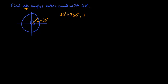If we add another revolution, we get 20 degrees plus 360 plus another 360. That essentially is 20 degrees plus 720 degrees. We can do it again.